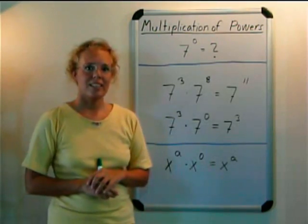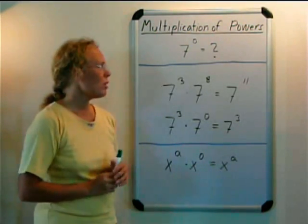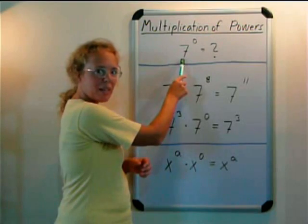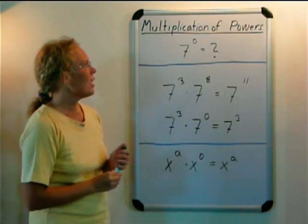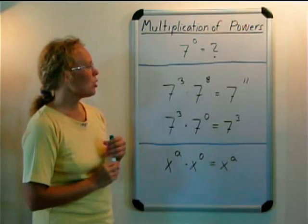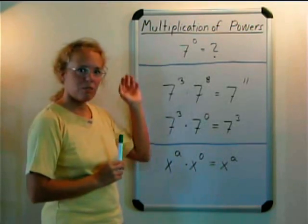Let's look at it a little bit more. What would 7 multiplied by itself 0 times be? And this time we are going to use the law for multiplication of powers.